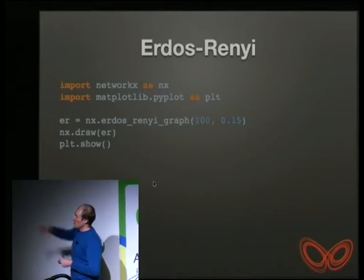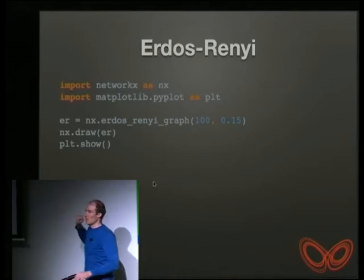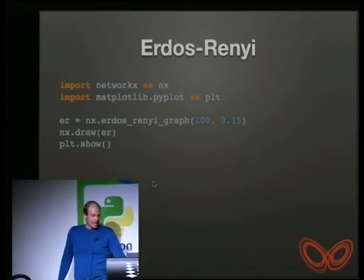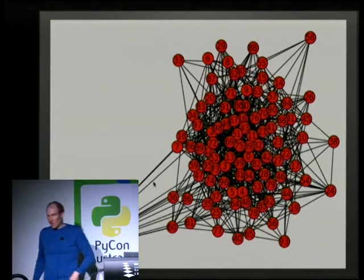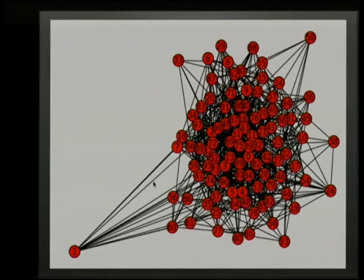NetworkX makes the Erdős–Rényi graph really easy. The call lets you specify how many nodes you want and the probability of interconnection between any two nodes, then you draw it. There are 100 nodes here all randomly connected. In certain instances this is going to be a really useful graph for people to start looking at graph properties.